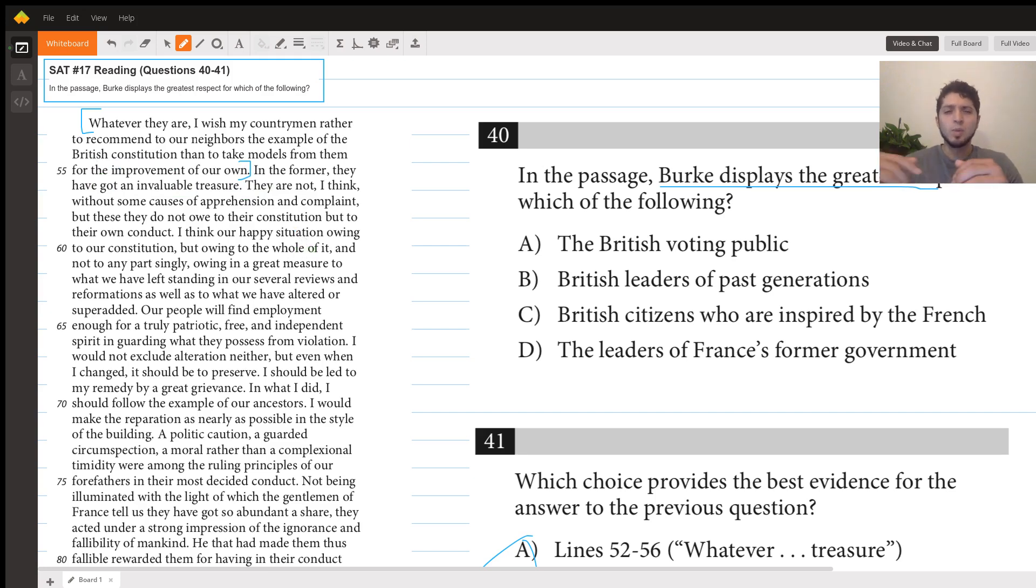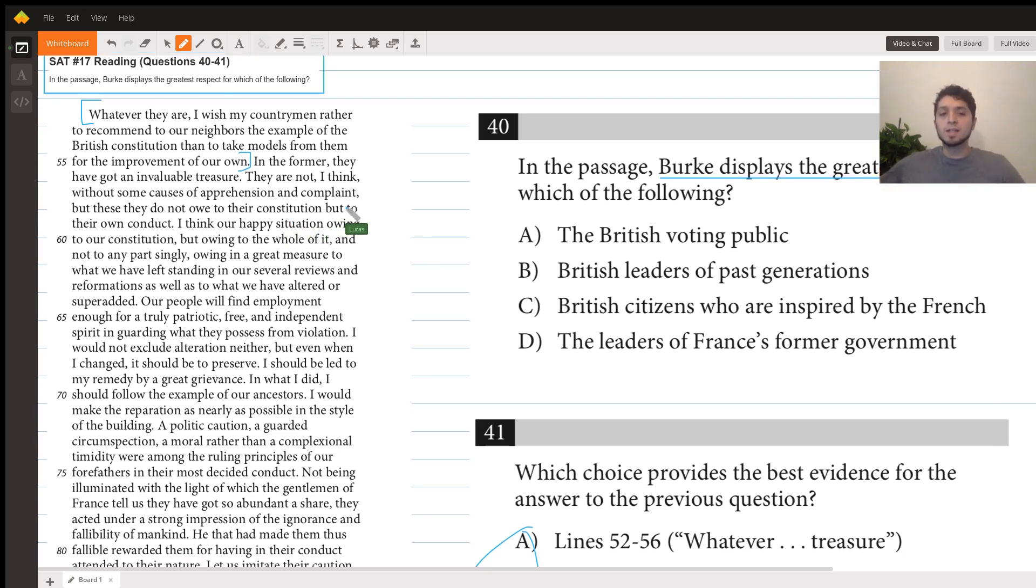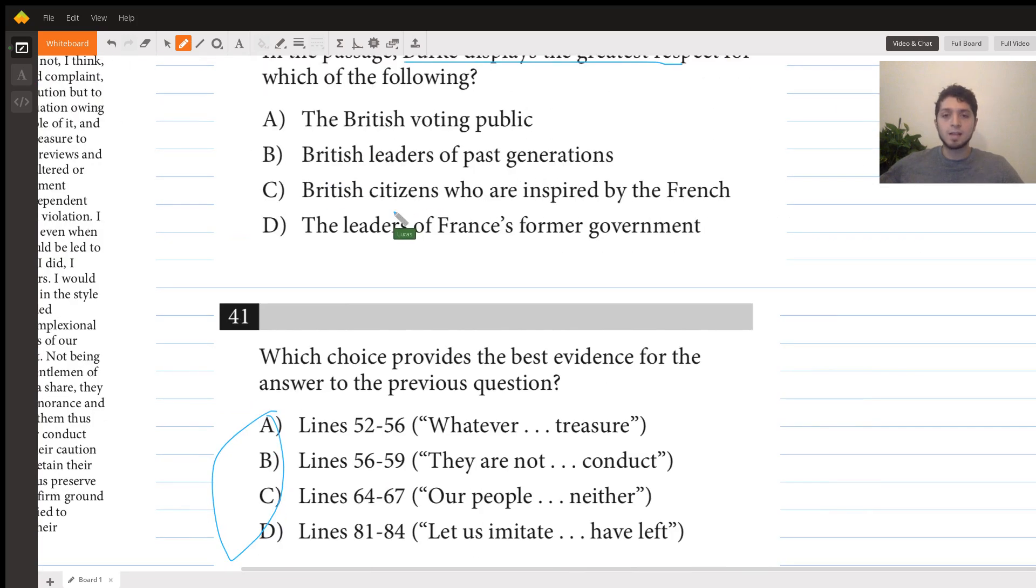This whole paragraph is kind of challenging to understand, but essentially what Burke is saying is that he wishes the British, his countrymen, would recommend the example of the British constitution to the French as opposed to adopting their improvements as their own. So basically he's saying instead of looking to the French and trying to follow their improvements, you should be advocating for a constitution similar to our own because he thinks the British constitution is the best.